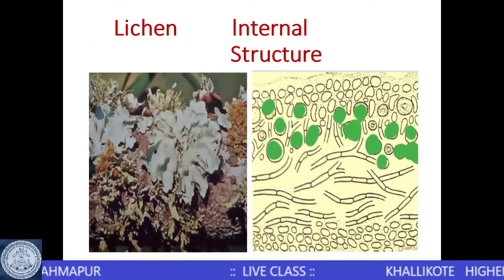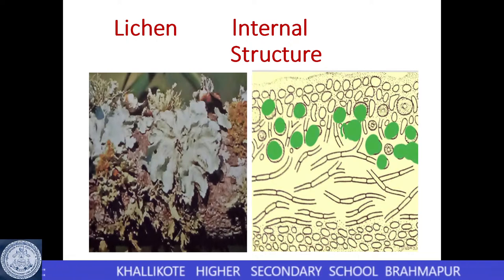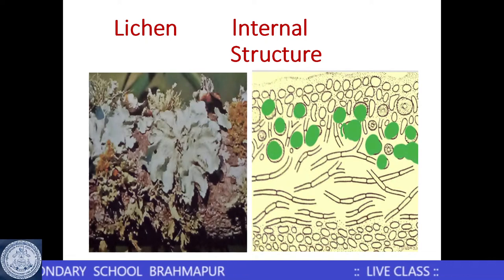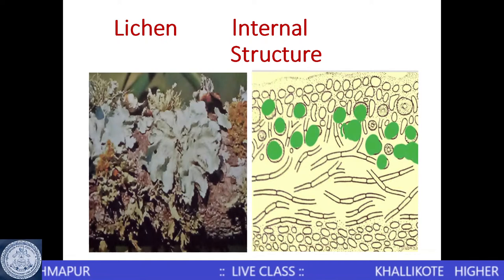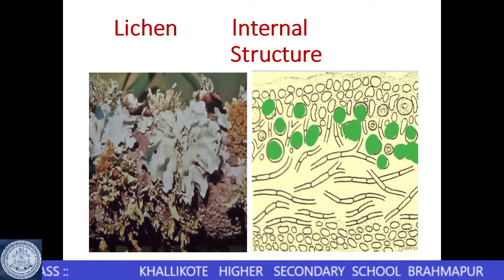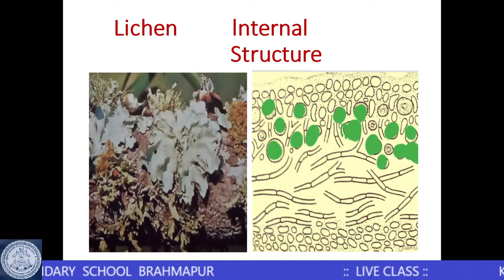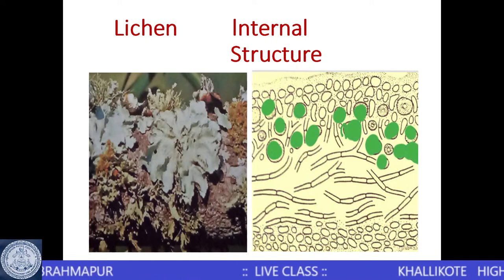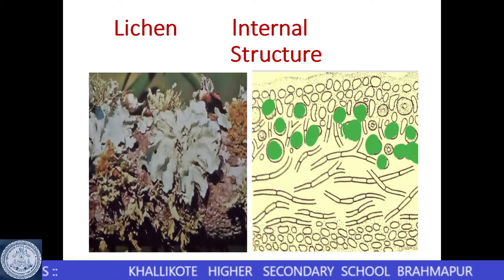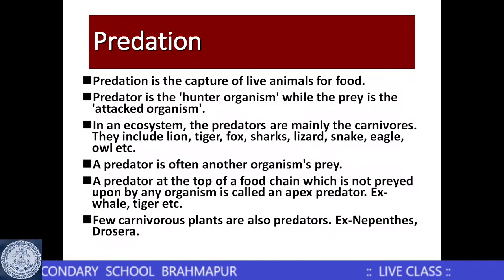Another example of mutualism is the mycorrhizal association — the association of a fungus with the roots of higher plants. Some higher plants like pinus lack root hairs to absorb water and minerals, so fungal hyphae twine around the roots, absorb water and minerals, and make them available to the root. In turn, the root cells provide the fungus with energy-rich carbohydrates for its survival.